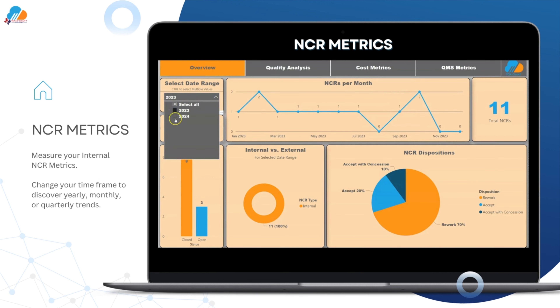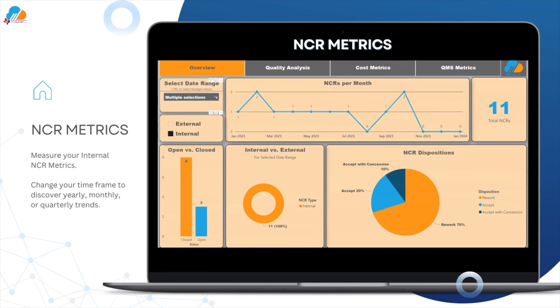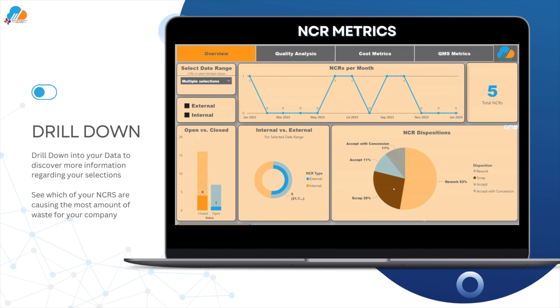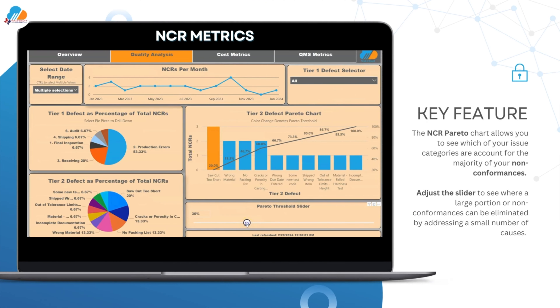The NCR Pareto chart allows you to see which of your issue categories account for the majority of your non-conformances. Adjust the slider to see where a large portion of non-conformances can be eliminated by addressing a small number of causes.